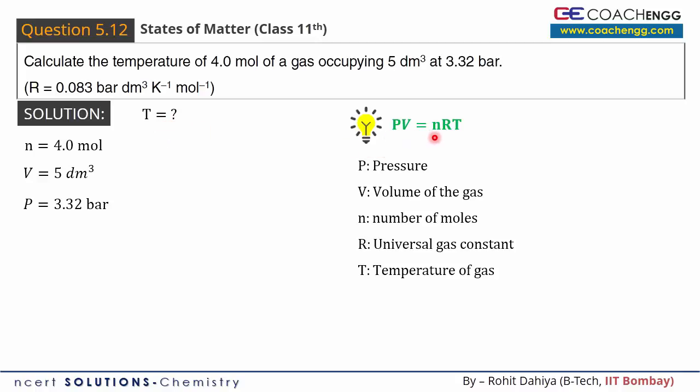We will use the equation of state of gas: PV equals nRT. P is pressure, V is volume, n is the number of moles, R is the universal gas constant, and T is the temperature of the gas expressed in kelvins.